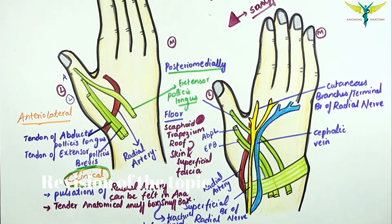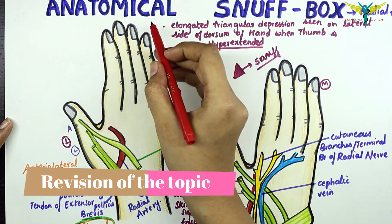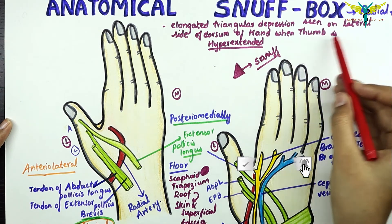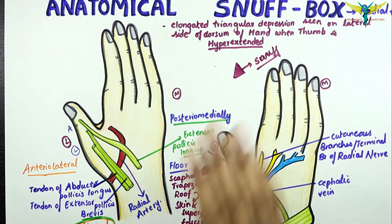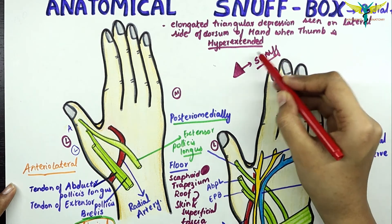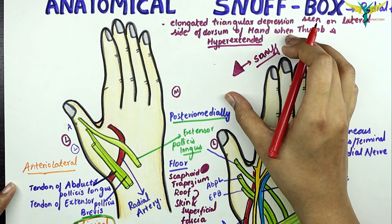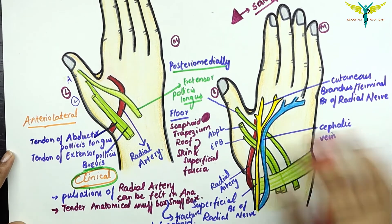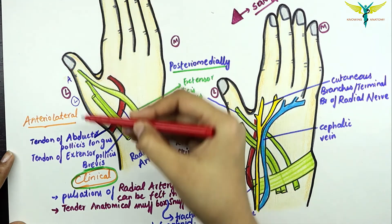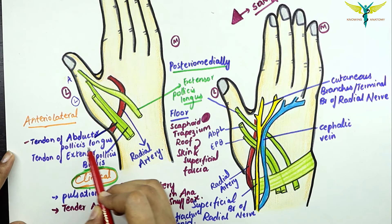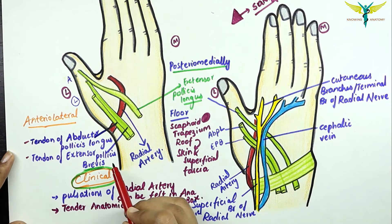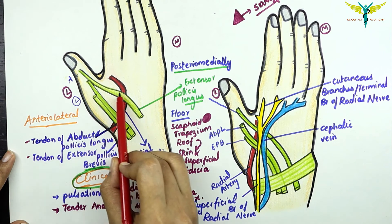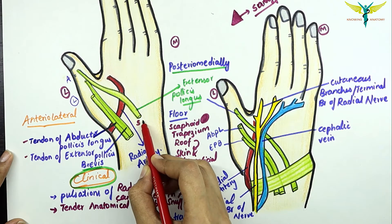Revision: The anatomical snuff box is also called the radial fossa. It is an elongated triangular depression seen on the lateral side of the dorsum of the hand when the thumb is hyperextended. The name originated from placing tobacco powder and sniffing it. The anterior lateral boundary is formed by the tendon of the abductor pollicis longus and the tendon of the extensor pollicis brevis. The posterior medial boundary is formed by the extensor pollicis longus tendon.